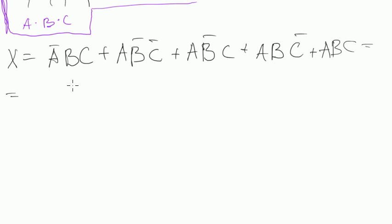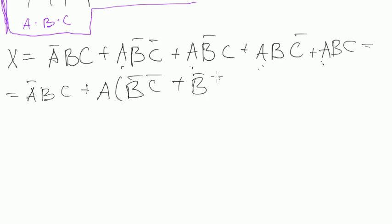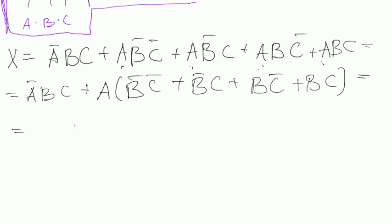What can we do? I see — we have a's all around: we have a here and here and here and here. Let's leave the first term and then take a's out of brackets everywhere. We take a out of brackets — inside the bracket we have: b negated, c negated, then b negated, c, then b, c negated, then b, c.